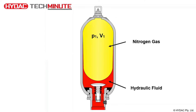Once the system pressure increases above the gas pre-charge pressure, the poppet valve opens, the hydraulic fluid enters the accumulator, and the bladder is compressed. The hydraulic fluid will continue compressing the bladder if the system hydraulic pressure increases. P1 is the minimum system operating pressure and V1 is the corresponding nitrogen volume at that pressure. It is important to note that the hydraulic system pressure and the nitrogen gas pressure are always in equilibrium.